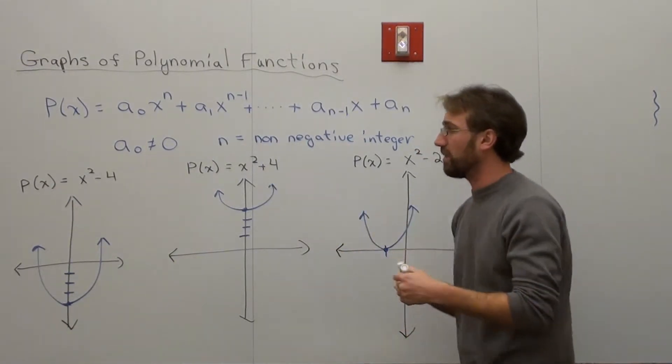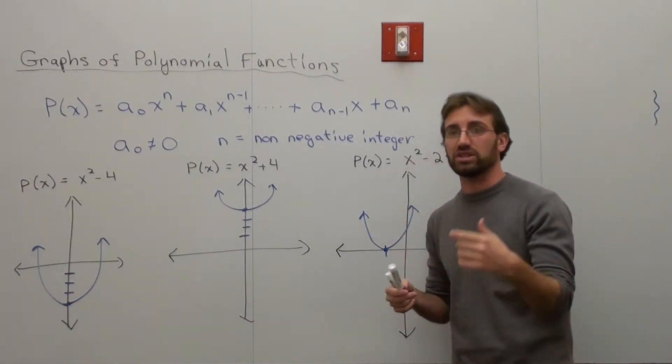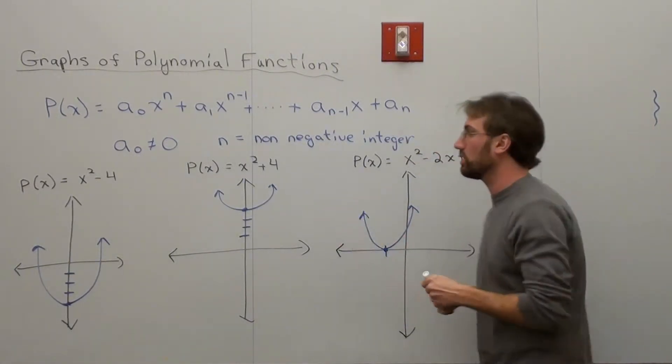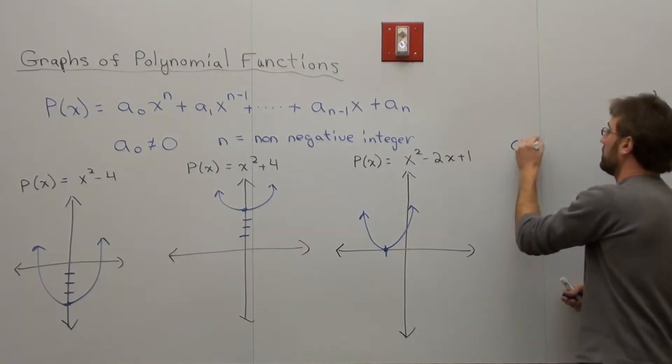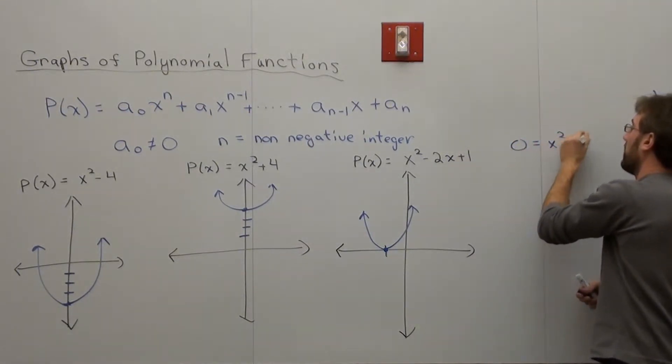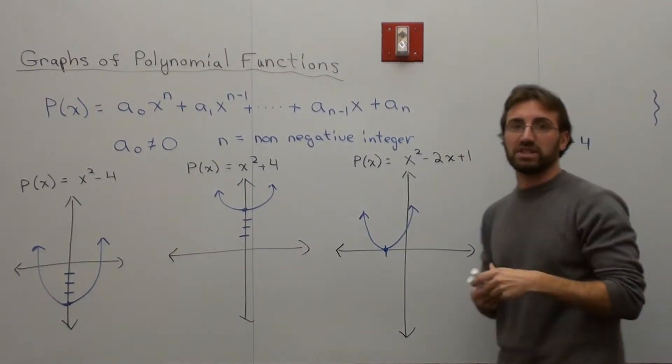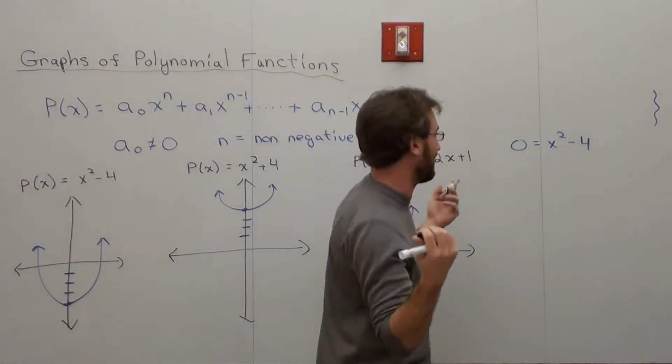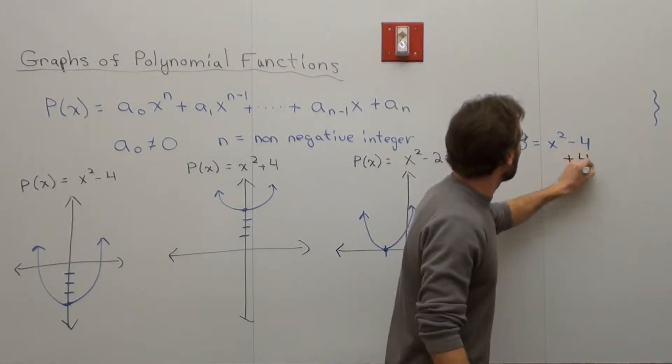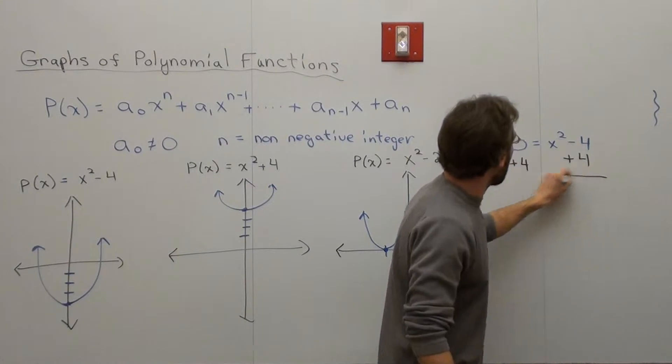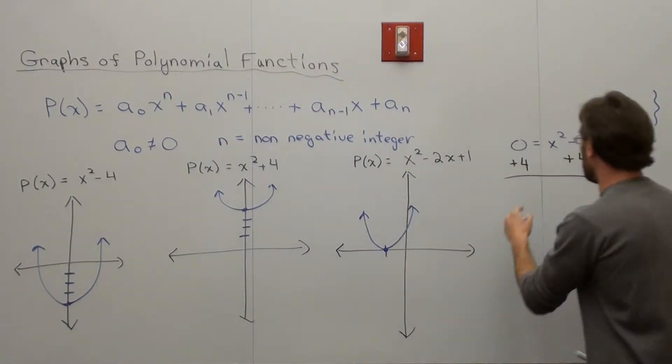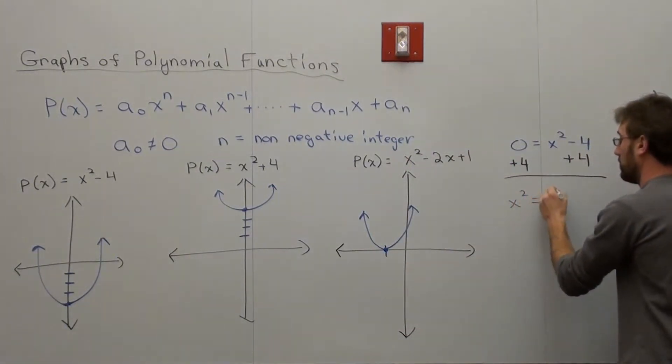So I've got x squared minus 4 equals P(x). Set your P(x) equal to zero in order to figure out the zeros. So I've got 0 equals x squared minus 4. Now this one's really nice because it happens to work out very easily, like they're supposed to. Add 4 to both sides, and I've got x squared equals 4.